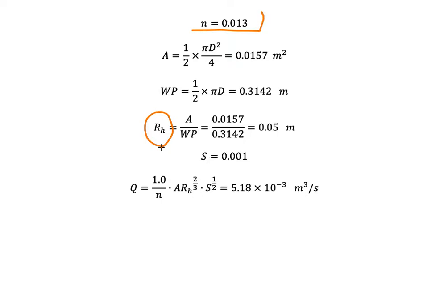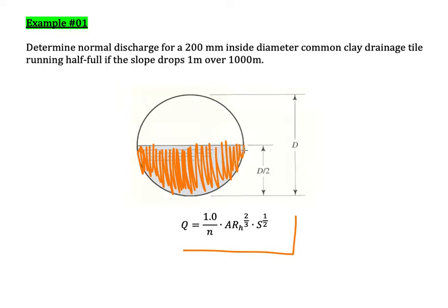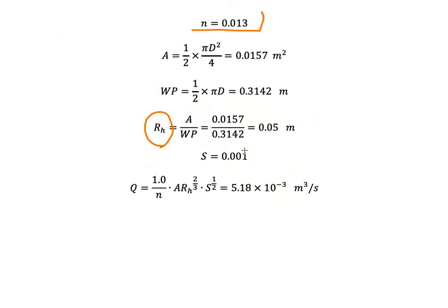The hydraulic radius is calculated as area A divided by the wetted perimeter. For A, please bear in mind we only calculate the cross-sectional area of water, not the cross-sectional area of the pipe. A equals one half of the total circular area, giving us 0.0157 square meters.